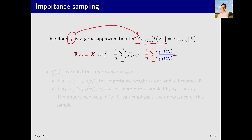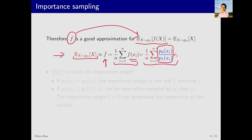Thus this average f-bar can approximate E[x] under p0. Substituting the expression for f(x), we get a weighted average: we average over x_i but each term carries a weight p0(x_i) / p1(x_i). This weight is called the importance weight. If p1 equals p0, the weight becomes one and f-bar and x-bar are exactly the same.